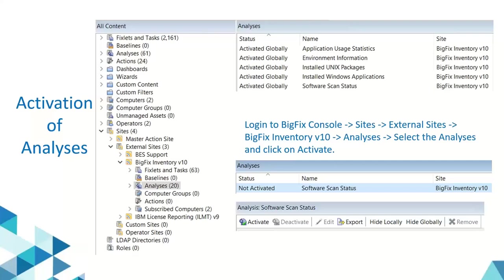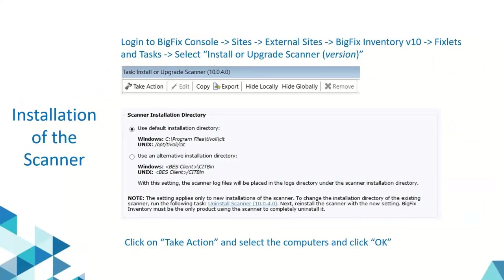Let's proceed to installation of the scanner. The scanner is a piece of software that sits on top of your BigFix client, which enables it to perform scans to gather software and hardware inventory. You can select the fixlet 'Install or Upgrade Scanner', click on Take Action, and select the computers on which you want to install it.